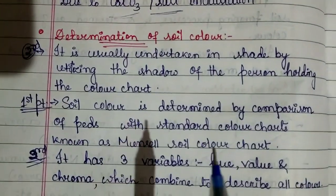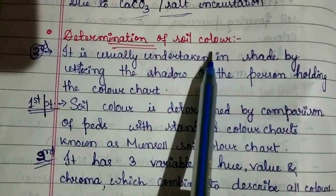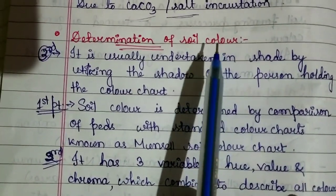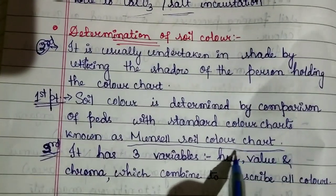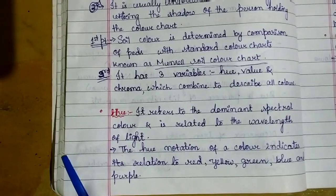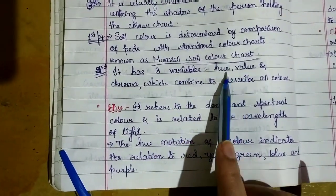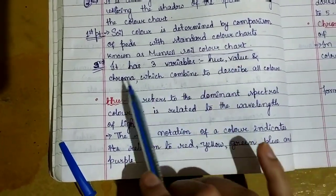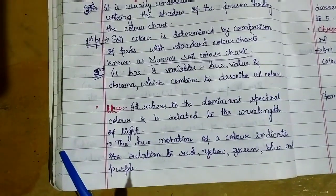Coming to determination of soil color: How do we scientifically as soil scientists or agriculturists decide soil color? For determining soil color, we actually use one chart known as Munsell soil color chart. In the Munsell soil color chart, there are three variables: hue, value, and chroma. These three parameters combine to describe all soil colors.